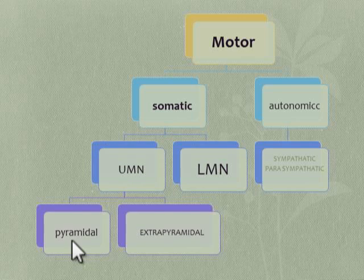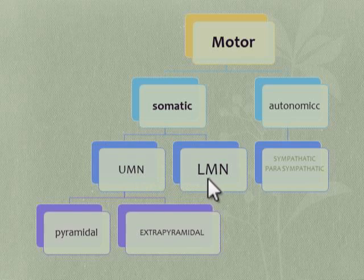The pyramidal tract further descends and ends in the anterior horn of the spinal cord. Regarding derangement in upper and lower motor neurons: upper motor neuron lesion mainly causes weakness, extensor plantar response, increased muscle tone, and exaggerated reflexes, with no muscle wasting. Muscle wasting is predominantly seen in lower motor neuron lesions. In lower motor neuron lesions there is wasting and fasciculations.